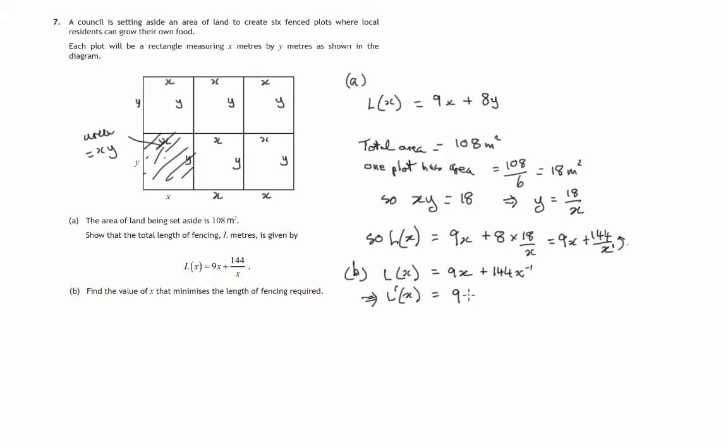bring it down to the front, minus 1 times 144 times x to the minus 2, we take 1 away from that index. So we end up with 9 minus 144 over x squared.